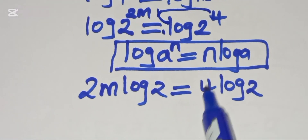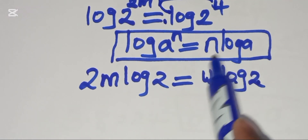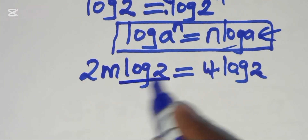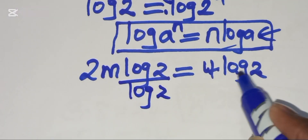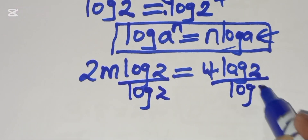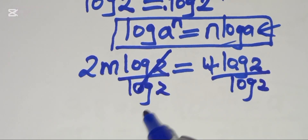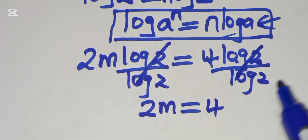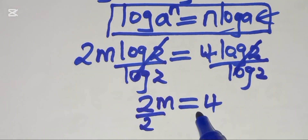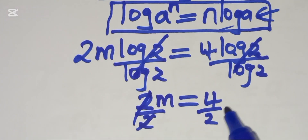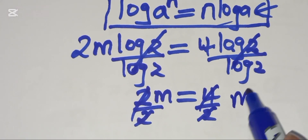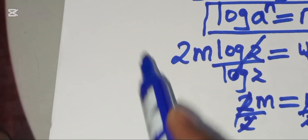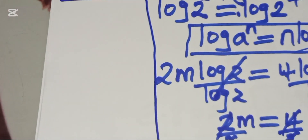Dividing both sides by log 2, we get 2m equals 4. Simplifying, m equals 2. So both methods confirm that the value of m is 2.